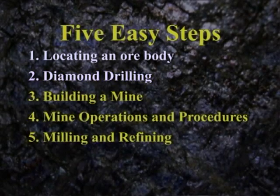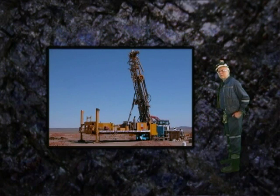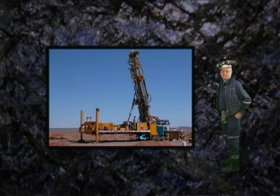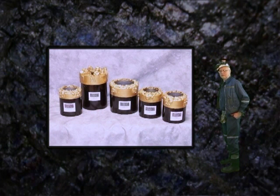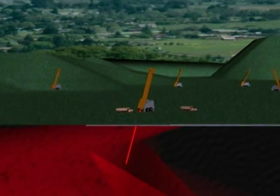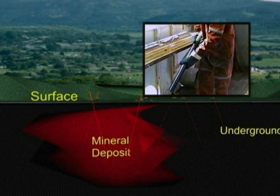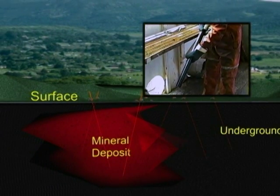Step 2: Diamond Drilling. The name of the machine known as a diamond drill does not mean a drill that drills for diamonds, although it can be used for that purpose. The term diamond drill refers to the cutting bit, which is made of hard industrial diamonds. The diamond drill operations allow for the recovery of long, round, cylindrical samples of rock and ore.